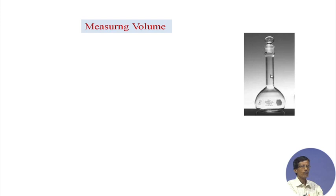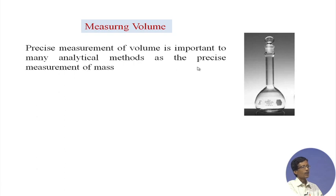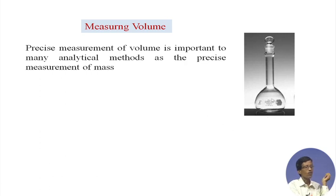You invert the volumetric flask and shake it for a uniform solution of potassium dichromate. Once done, you know the weight — for making an N/10 solution of potassium dichromate you require 1.2258 g of that solid. Taking nearby that weight, you get a typical factor and know the exact strength. The volume is known by the mark on the bottle. Precise measurement of volume is very important for analytical technique — by knowing the volume you know the amount of mass.